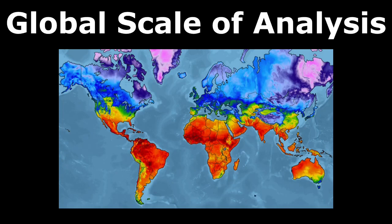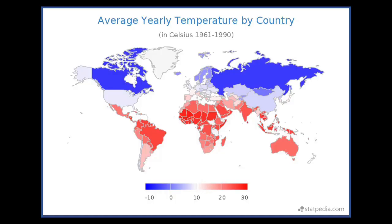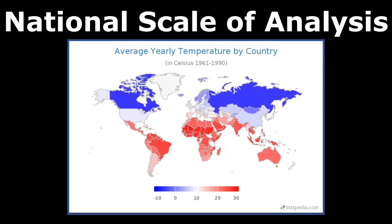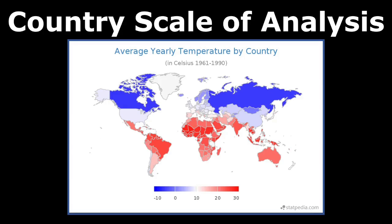Even if this map was just on Australia, we would still be looking at a global scale of analysis. Now here the countries are all one color — we're comparing and analyzing data per country, looking at temperature in Celsius. So this is going to be a national scale of analysis. We can definitely say Russia has around negative 10 degrees while Chad is around 20 to 30 degrees Celsius. You could also call this a country scale of analysis; national is not the only specific term for it.